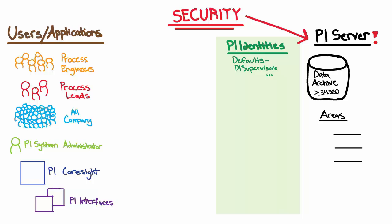For example, if your organization has a process engineering group, you can create a process engineer's PI identity. You can also create other identities, both for your user groups and your applications. Then you just need to set the PI identity's permissions on the different data archive areas that match up to these groups' roles.